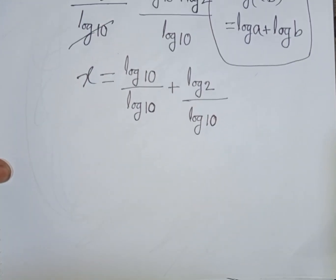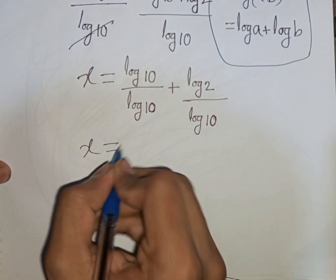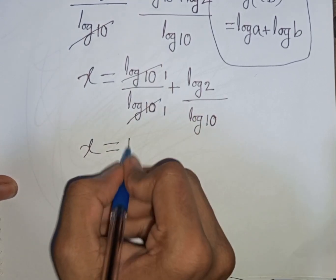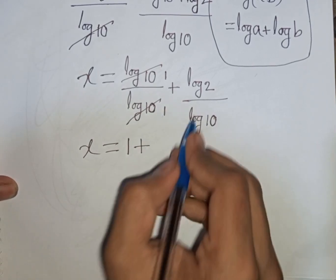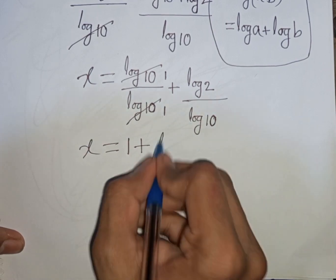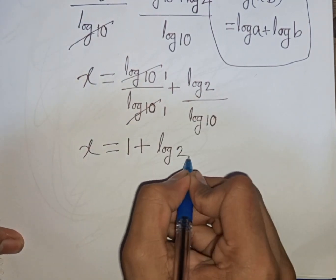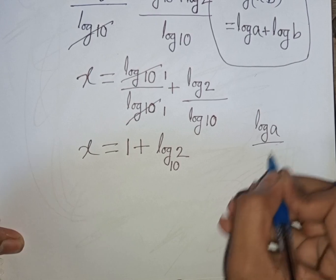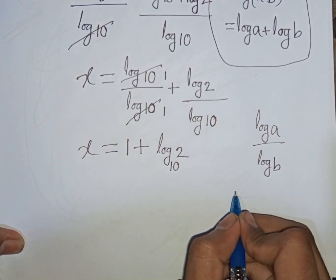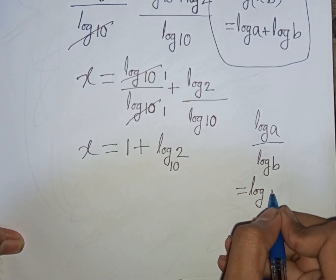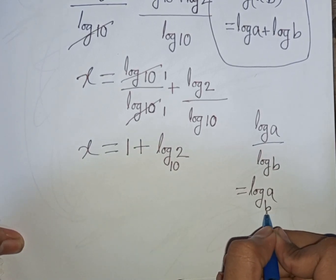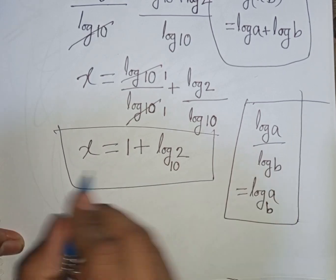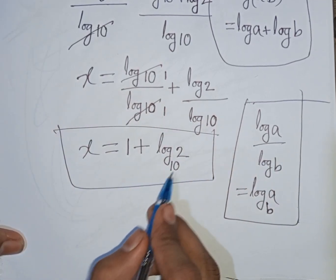Now x equals log 10 divided by log 10 — these cancel, giving 1 — plus log 2 divided by log 10, which equals log 2 base 10. According to the formula, log a divided by log b is equal to log a base b. So x is equal to 1 plus log 2 base 10. This is our final answer.